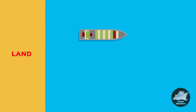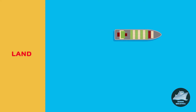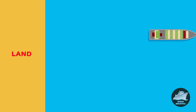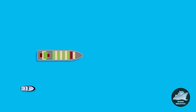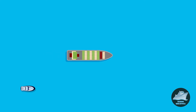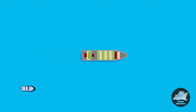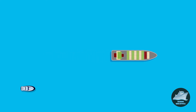Speed over ground is the speed of the ship with respect to the land or any other fixed object, such as buoys. Speed through water is the speed of the ship with respect to the water or anything floating on water.